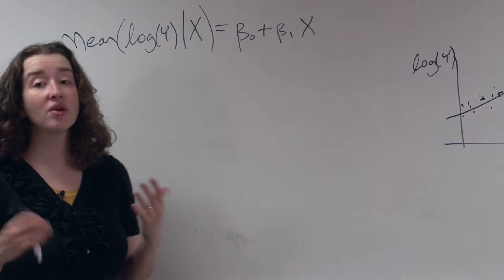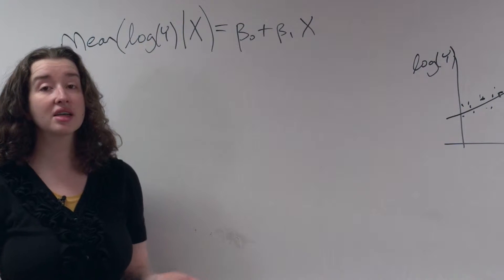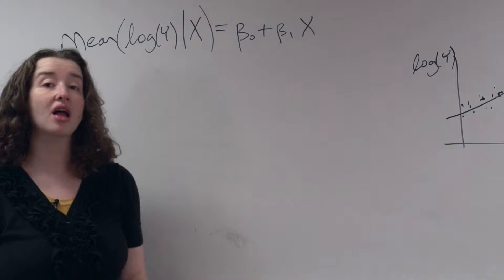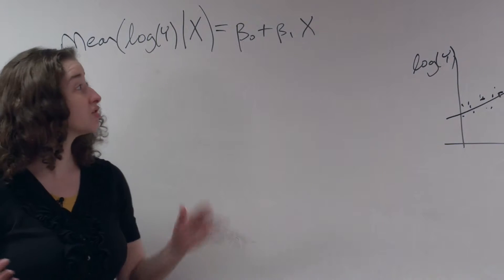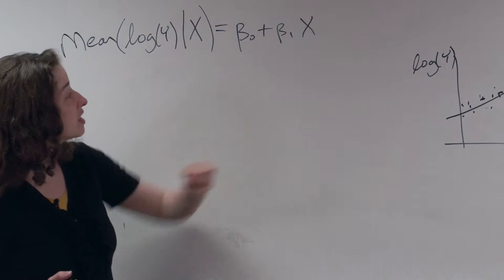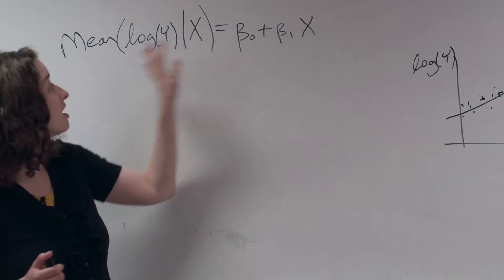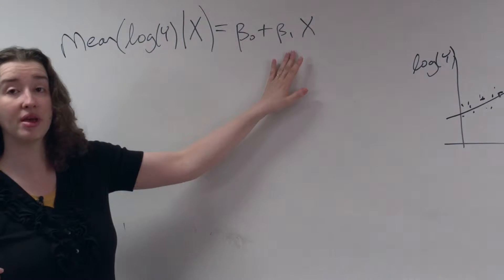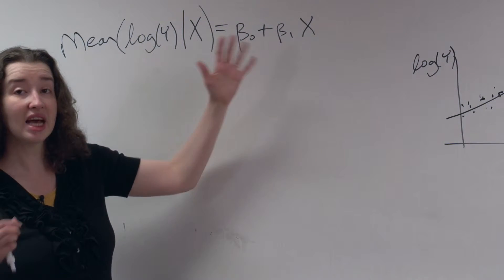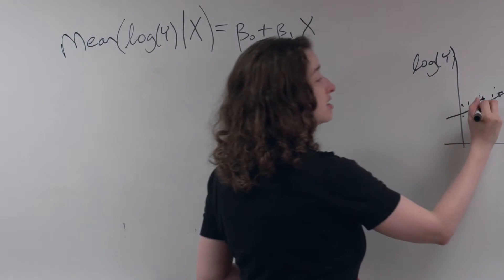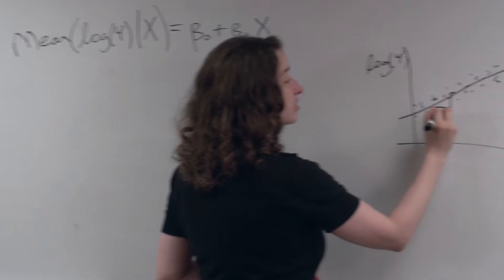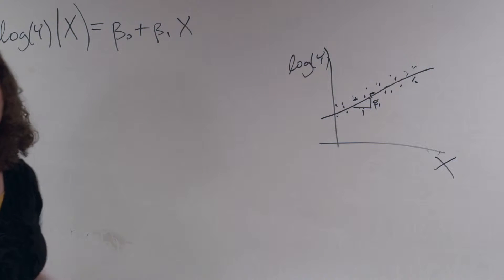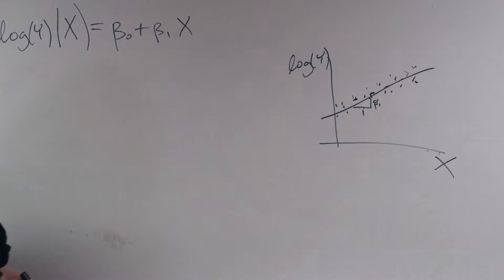If you're comfortable leaving y on the log scale, you can just stop. If y is dollars and you are comfortable talking about dollars, you can stop. You can say when x goes up by 1, the mean of the log of y goes up by beta 1. That's perfectly appropriate, because that's what this line says — when x goes up by 1, the mean of the log of y goes up by beta 1.